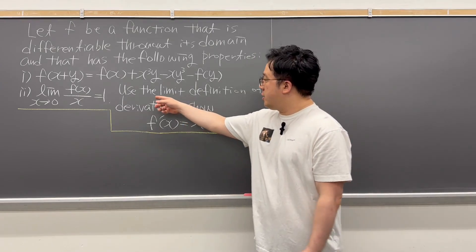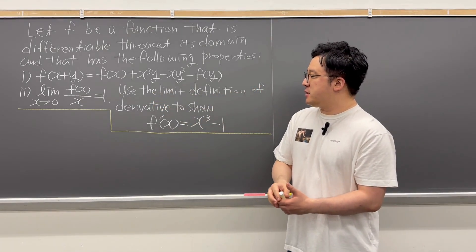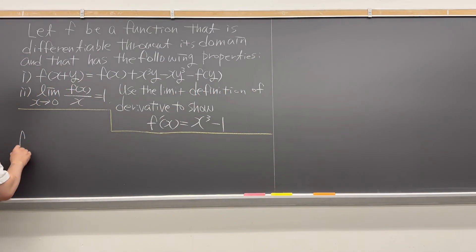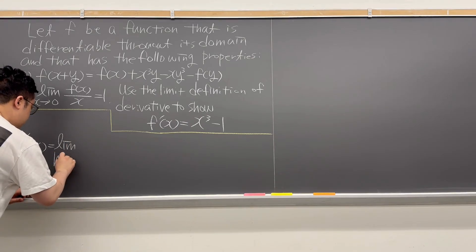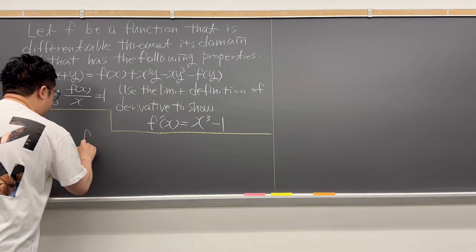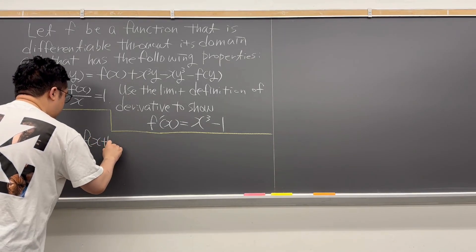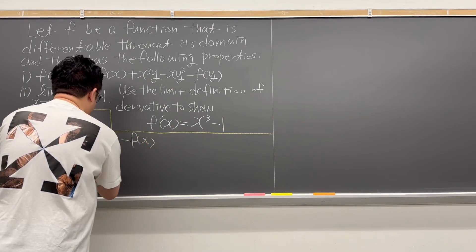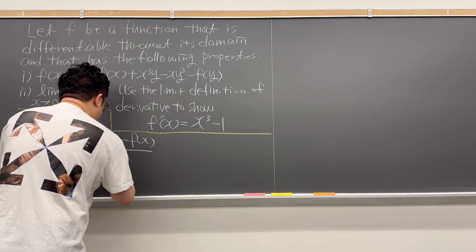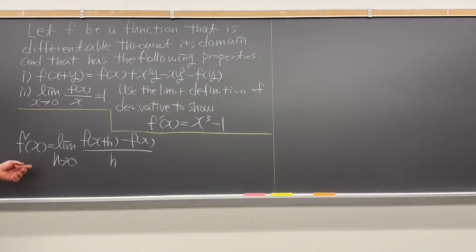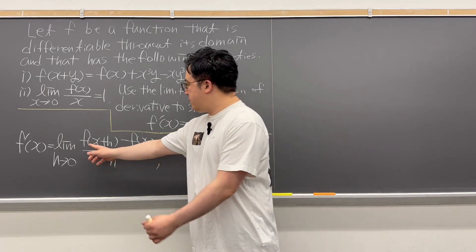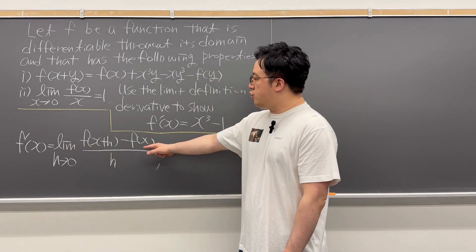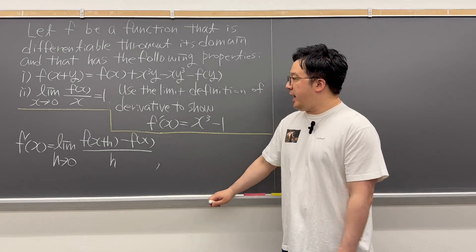The question is asking you to use the limit definition of derivative, so let's think about it. Your f prime, the derivative of f of x, is equal to the limit as h is going to zero of f of x plus h minus f of x, divided by h. This is your limit definition of derivative of f of x. We have f of x plus h on the numerator, and especially for this term f of x plus h, we can use the first condition.